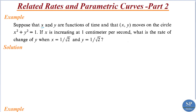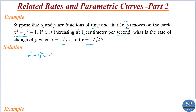Suppose that x and y are functions of time and that the point xy moves on the circle x squared plus y squared equal to 1. That is a unit circle. If x is increasing at 1 centimeter per second, what is the rate of change of y when x equals 1 by root 2 and y equals 1 by root 2?